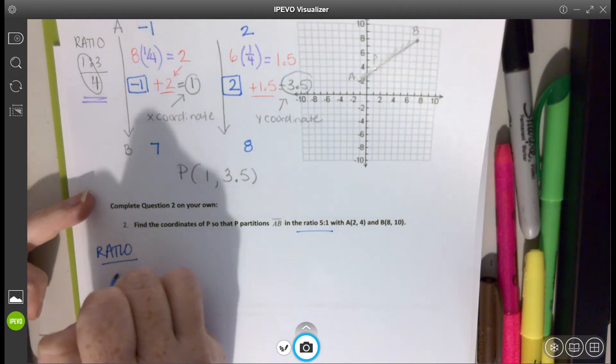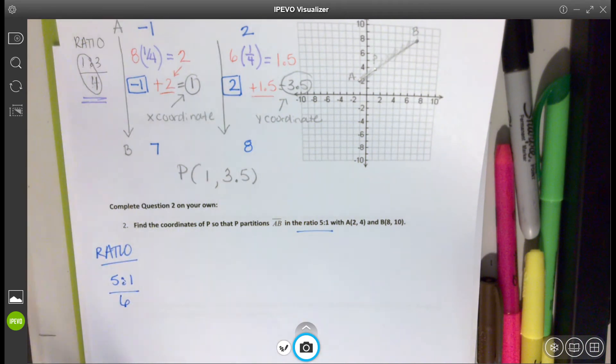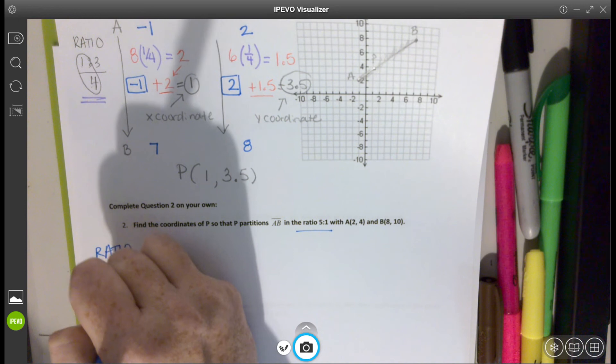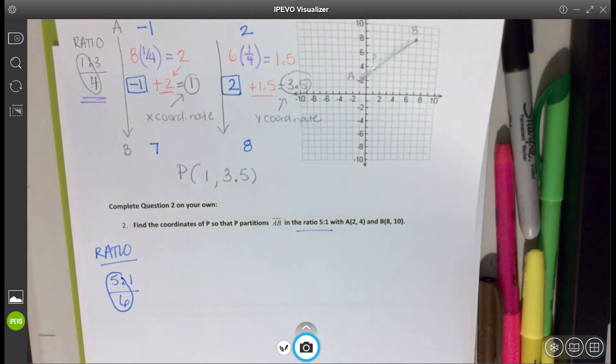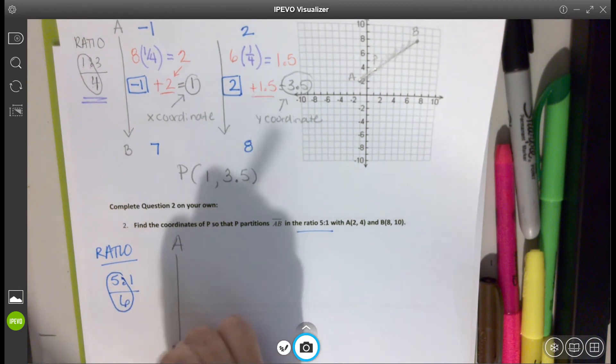My ratio is 5 to 1, which means I have a total of six pieces. I want to have my point 5 first, then to 1, so I want 5 sixths of the way of my line. So I'm going to start with point A, travel to B.